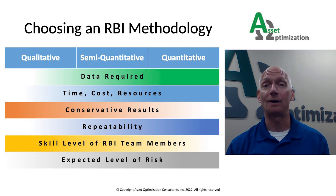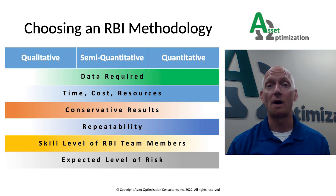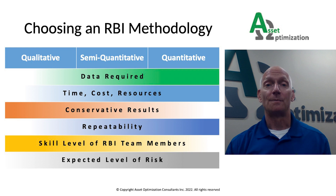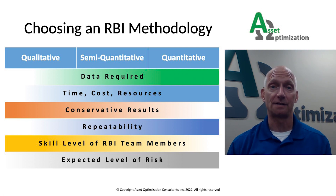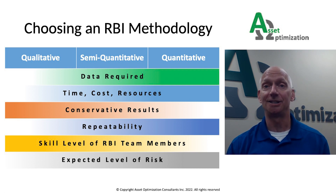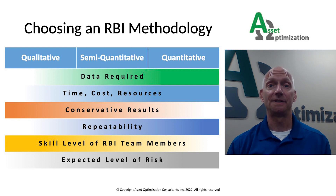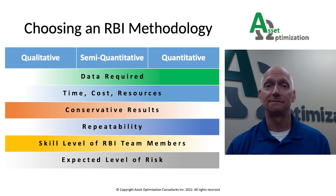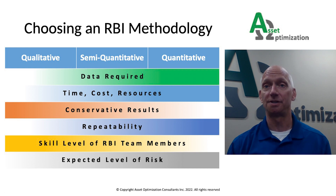Now that we have reviewed the different RBI methodologies and identified some available RBI software solutions, let me spend a few minutes discussing how to choose an RBI methodology. This diagram displays some characteristics of RBI assessments ranging over a spectrum from qualitative to more quantitative. Regarding data required: more detailed information and data are needed for a more quantitative RBI approach to provide inputs for the risk models, so if data availability is an issue, you may want to choose a more qualitative approach. Regarding time, cost, and resources: since the data collection effort can be 50% or more of an RBI assessment, resources, time, and cost will increase with more quantitative approaches. Regarding conservative results: since you're using less inputs and more judgment, a qualitative risk assessment will generally have more conservative results.